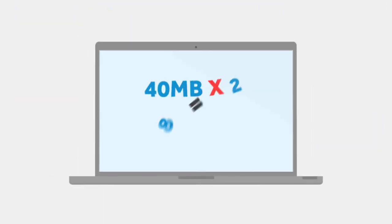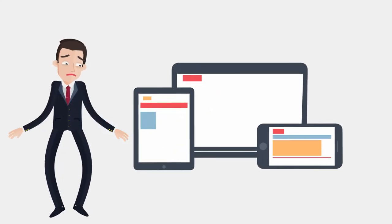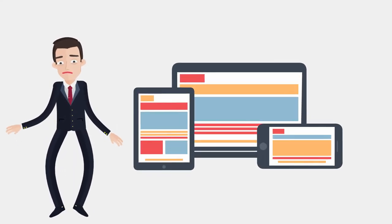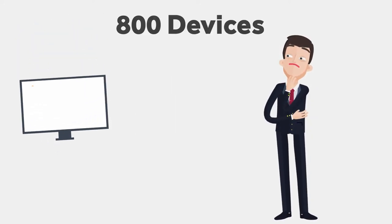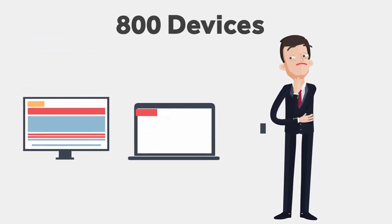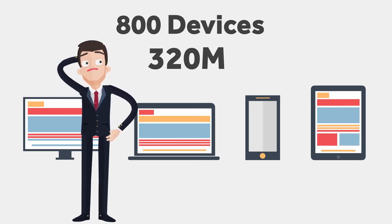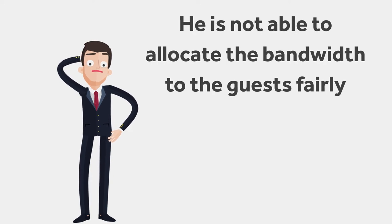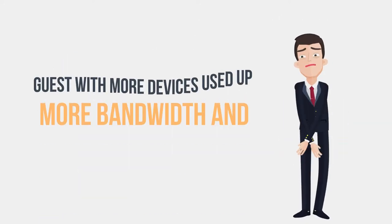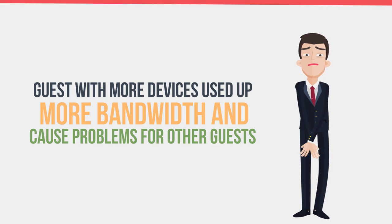Andy tried doubling his bandwidth to 80 megabytes, but that didn't help. The key issue is Andy does not know how many devices to cater for in his planning anymore. If he assumes 800 devices in total, the total bandwidth required would be 320 megabytes, which is too expensive. Worse still, he is not able to allocate the bandwidth to his guests fairly, as guests with more devices use up more bandwidth and cause problems for other guests.